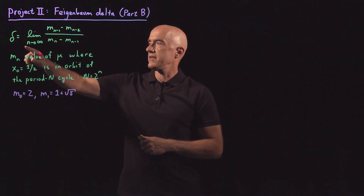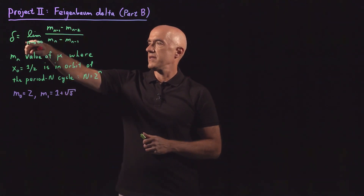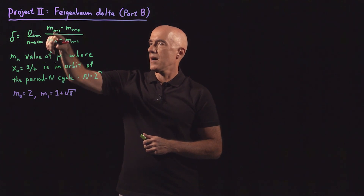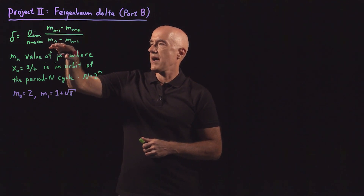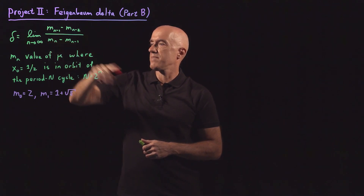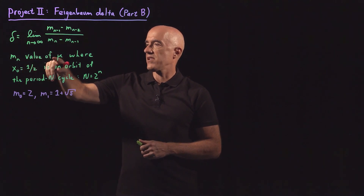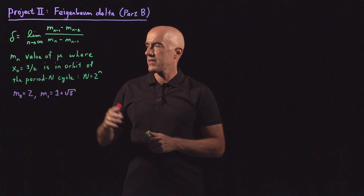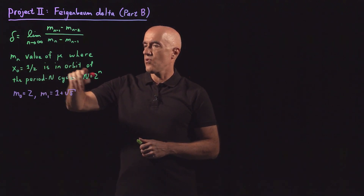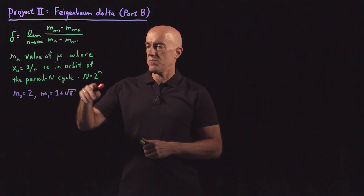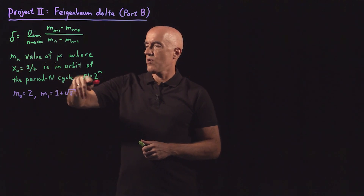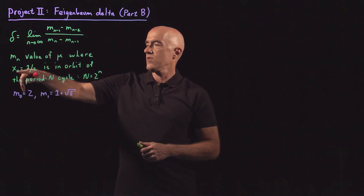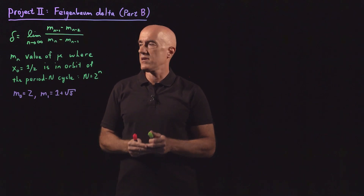Remember that we've already redefined the Feigenbaum delta to be the limit as n goes to infinity of these m parameters — the width m sub n-1 minus m sub n-2 divided by the smaller width m sub n minus m sub n-1. We've defined m sub n to be the value of mu in the logistic map where x naught equals one half is in the orbit of the period n cycle. Because of period doubling, the period n cycle is 2 to the n.